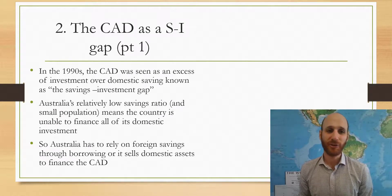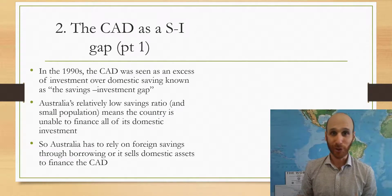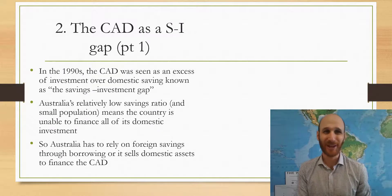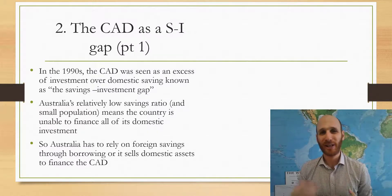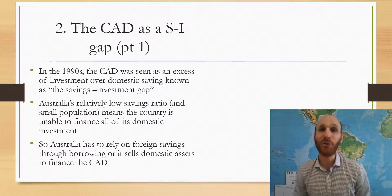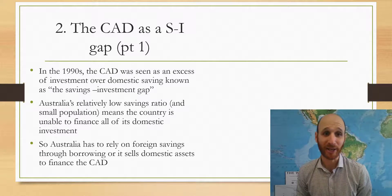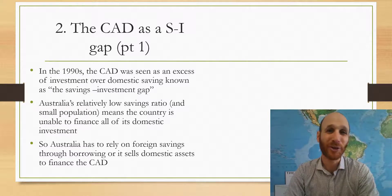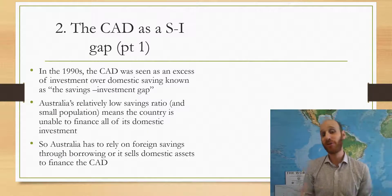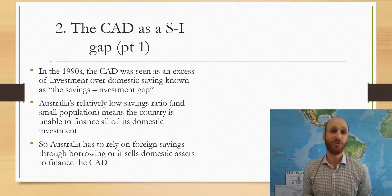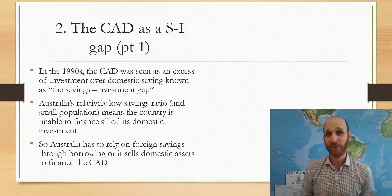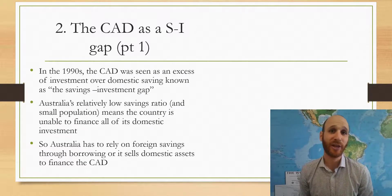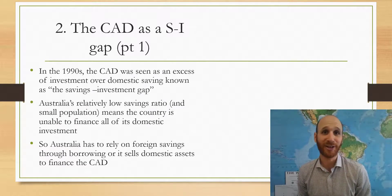Australia's relatively low savings ratio and low population means that the country can't fund all the domestic investment it would like. Australia has to rely on foreign savings through borrowing, or we sell domestic assets, to finance our investment requirements and to fund the current account deficit.